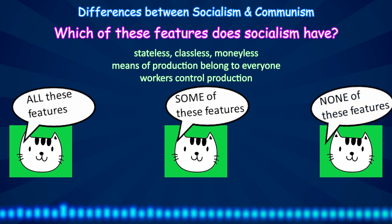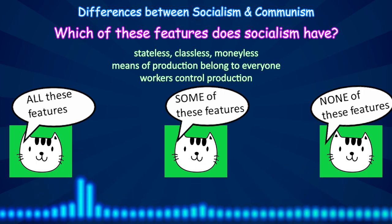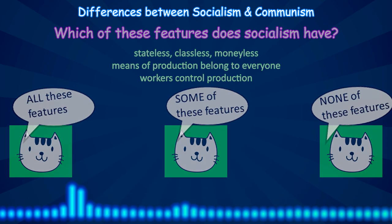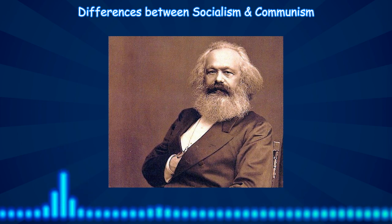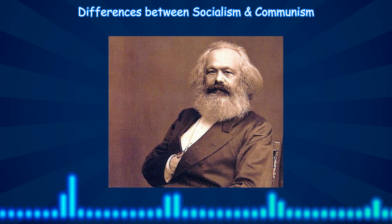This brings us back to the question of how socialism and communism are similar and how they're different. Communism is stateless, classless, and moneyless — the means of production belong to everyone and workers control production. According to some socialists, all these things true of communism are also true of socialism. According to others, socialism has some but not all of these features. And according to others, socialism has none of these features. Because socialists and communists disagree on how to define socialism, they also disagree on what the similarities and differences are between communism and socialism. So the answer to what's the difference between communism and socialism is that there really is no definite answer — it all depends on how you define socialism. Karl Marx didn't make any distinction between socialism and communism; over the course of his life, he used these two words interchangeably to describe a stateless, classless, moneyless society.